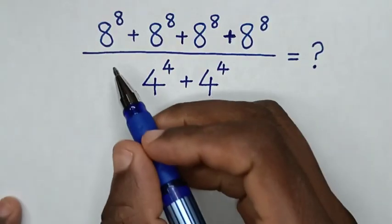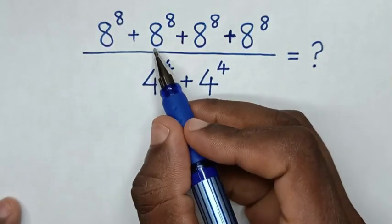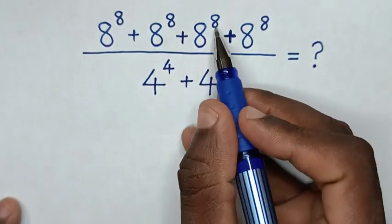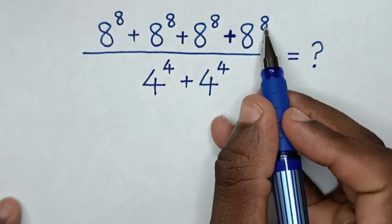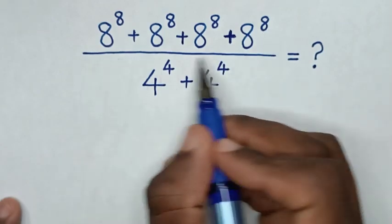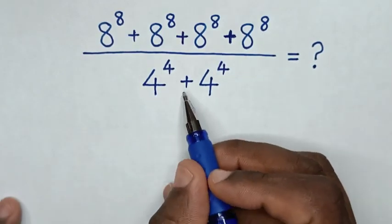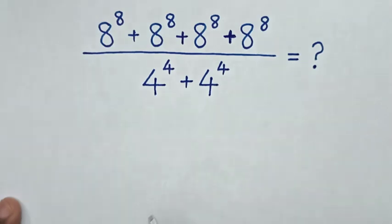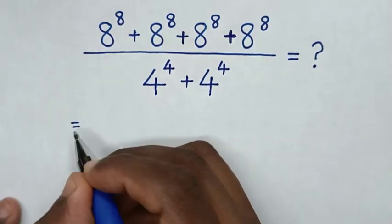Hello. How to solve 8 power 8 plus 8 power 8 plus 8 power 8 plus 8 power 8, over 4 power 4 plus 4 power 4. So, it will be equal to: